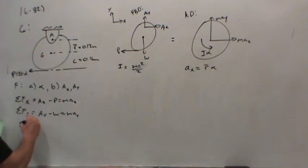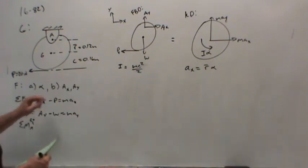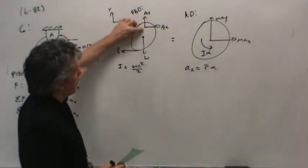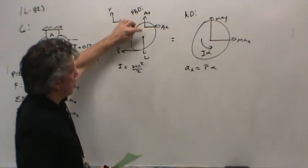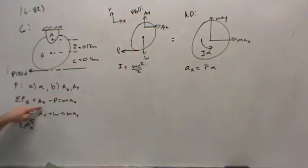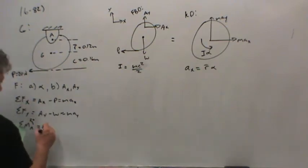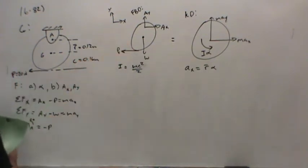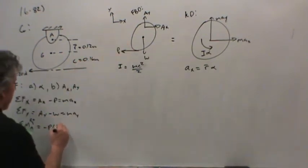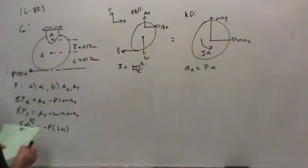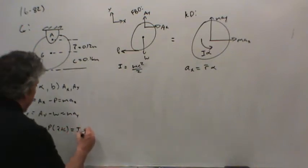Finally, summing moments about A, taking counterclockwise as positive. Why A? Because A is unknown, so if I could solve for P, that might help me get Ax, and once I get that, maybe I can get Ay. This would be negative P times R bar plus C.